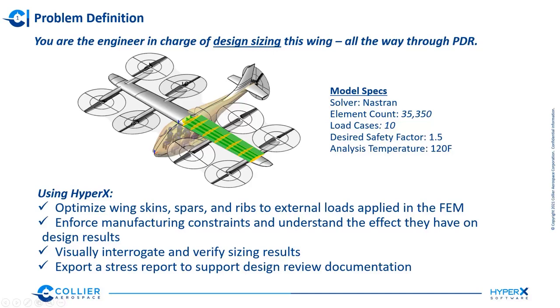With all of that being said, I'm going to quickly introduce the problem at hand and then get started on the tutorial. Say you are the engineer in charge of designing and sizing the wing shown here, all the way up through PDR. What you're looking at is a simple wing box model meant to represent something you might see in the urban air mobility industry. The FEM is pretty coarse — only 35,000 elements — but we have applied a total of 10 external load cases and picked a safety factor and analysis temperature.